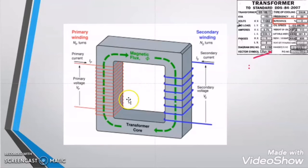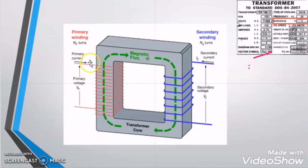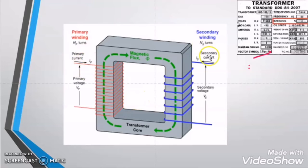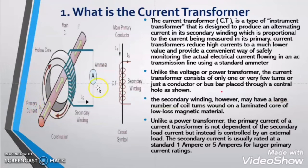Another big difference: in the power transformer the secondary current depends on the primary current and the primary current depends on the secondary current — there is a mutual relation. But in the current transformer the secondary current depends on the primary conductor, while the primary current does not depend on the secondary current. Even if we short or apply any other load to the secondary winding of the CT, the primary current will remain the same, as it is independent of the secondary winding.